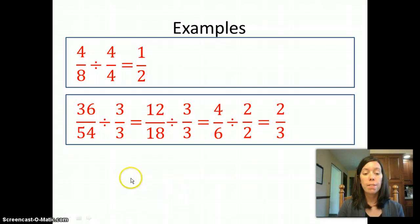So if I would have started all of this by dividing both of these by 18, I would have gone straight to lowest terms and had an answer of 2 thirds. But it's okay if you don't see that divisor right away. You can take a little more time and keep on dividing until you get to the lowest terms.